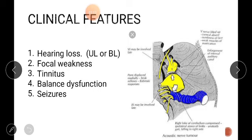Coming to the clinical features, acoustic schwannoma mainly occurs in the 8th cranial nerve. In close vicinity, it can involve the 7th cranial nerve, 6th cranial nerve, 5th cranial nerve, and 9th, 10th, and 11th cranial nerves, even the jugular vein. All this leads to associated clinical features like hearing loss, tinnitus, focal weakness, balance dysfunction, and seizures.